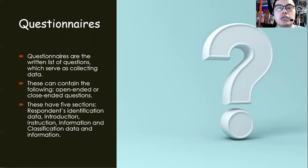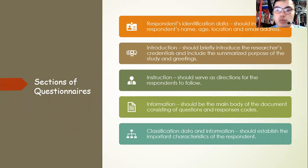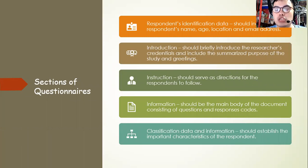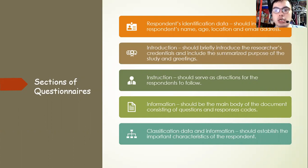Questionnaires are the written version of interviews — a written list of questions used for collecting data. They can contain open-ended and closed-ended questions and have five sections. The first is researcher identification data, which is basically demographics: name, age, location, and email address. The second is an introduction where you introduce your credentials and the purpose of the study. Third are instructions to guide respondents on how to answer. Fourth is the information section — the main body with questions and response codes. Fifth is classification data, which establishes the important characteristics of the respondent.